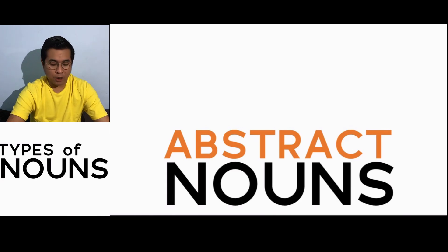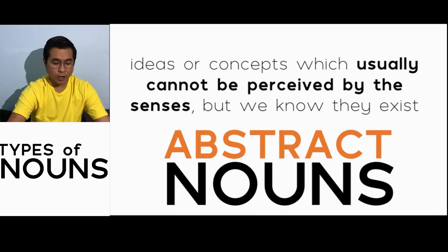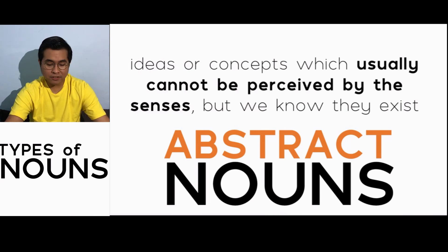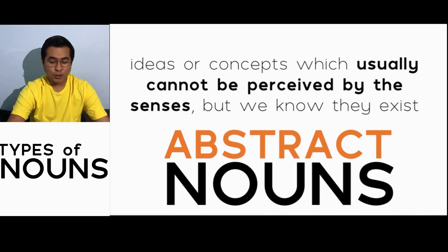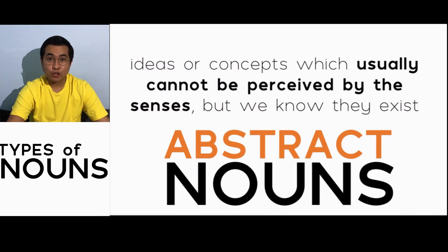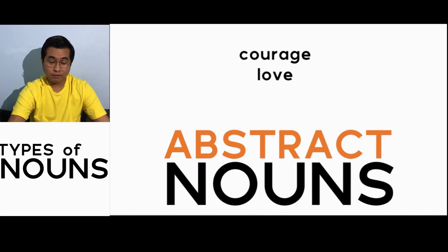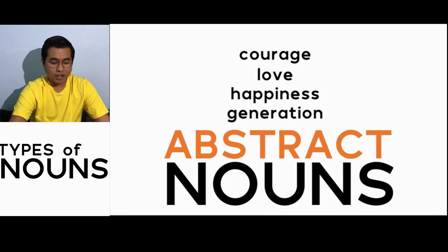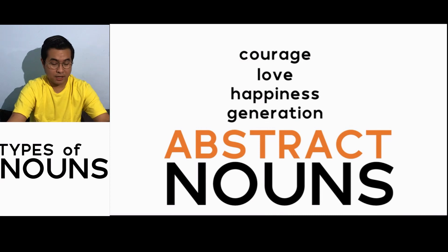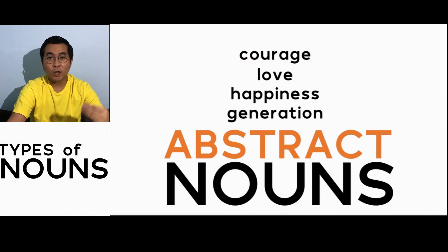Now we have abstract nouns. For abstract nouns, they are ideas or concepts which usually cannot be perceived by the senses, but we know they exist. This is the opposite of concrete nouns — with concrete you can experience it using your senses, but with abstract nouns you cannot. Examples are courage, love, happiness, and generation. We know these nouns exist, but they are not tangible and cannot be perceived by the senses.